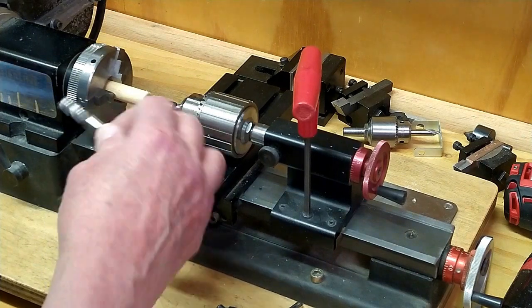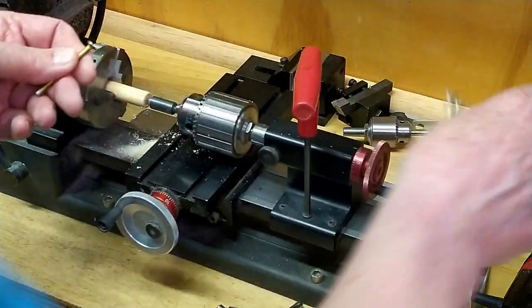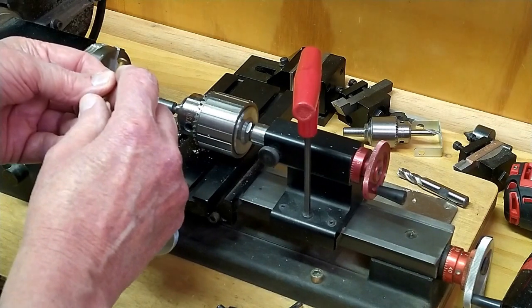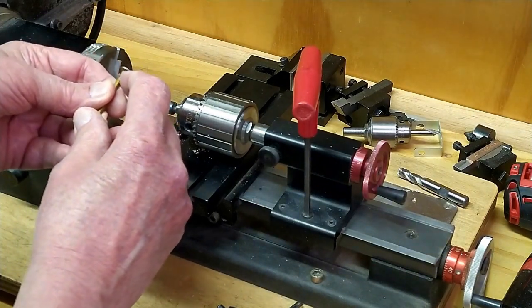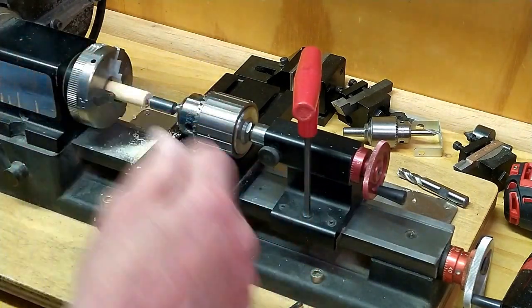Using the end mill, I'm going to machine a little pocket for the head of that nail to go into a little bit, and because the underside of this nail is a bit tapered, I'm going to chamfer the hole.